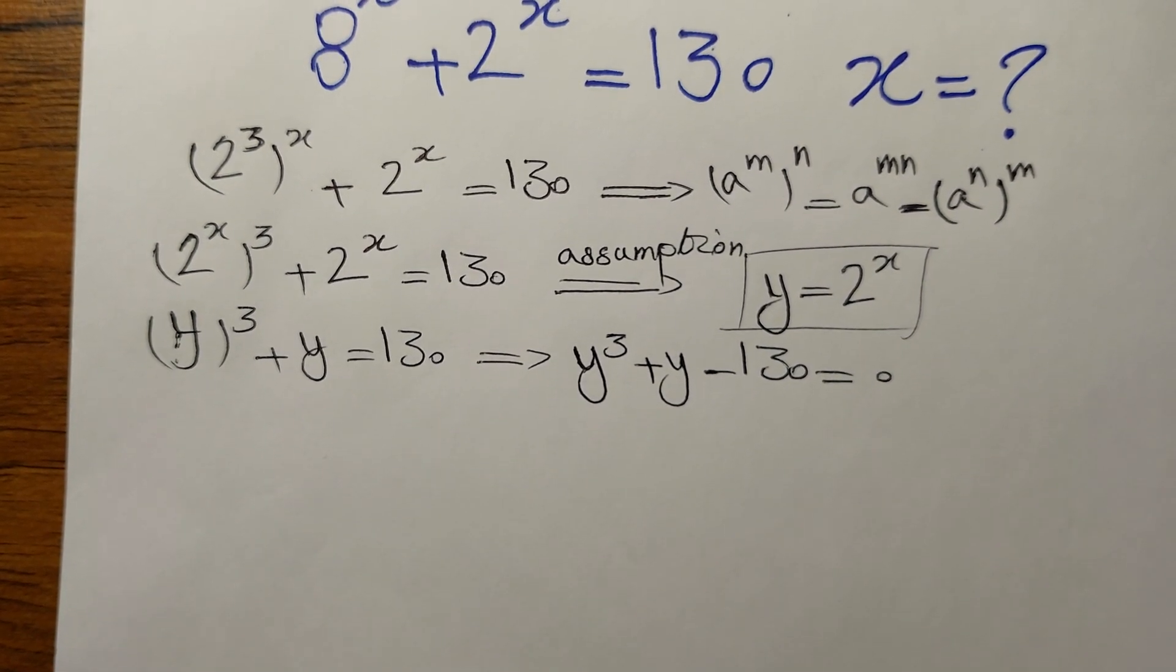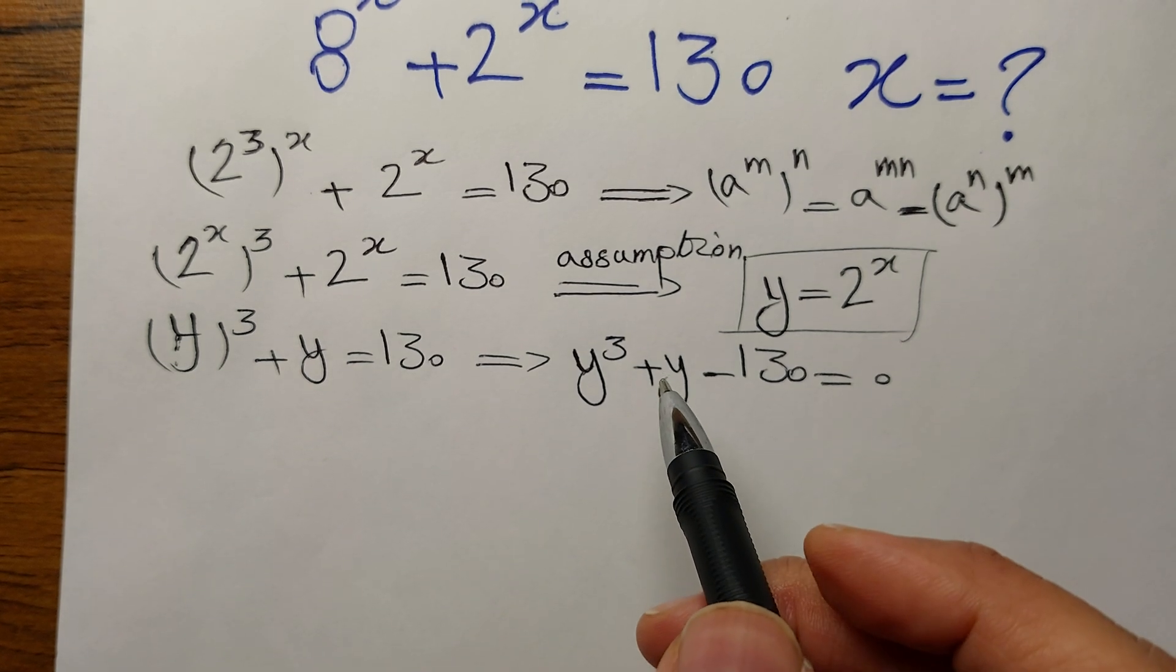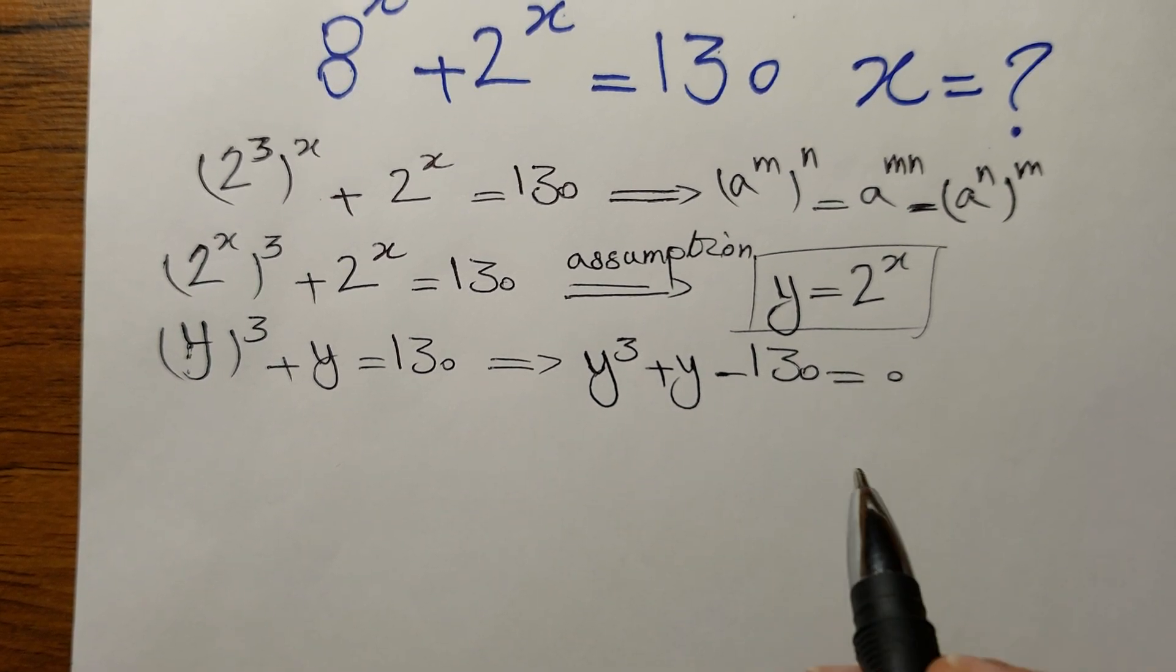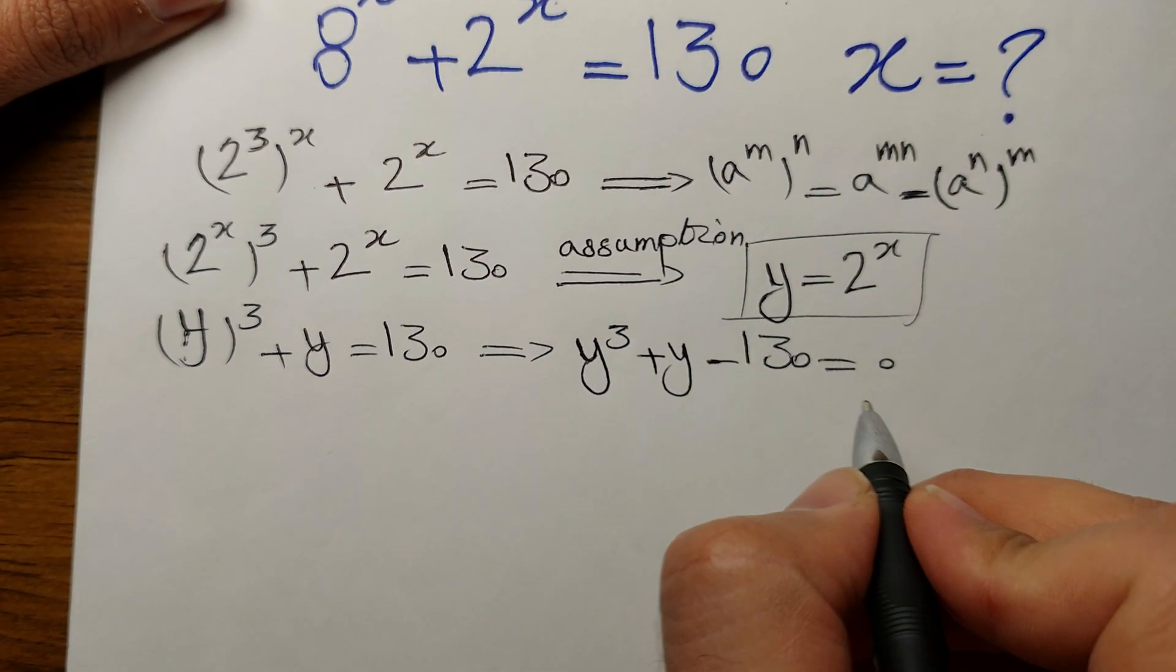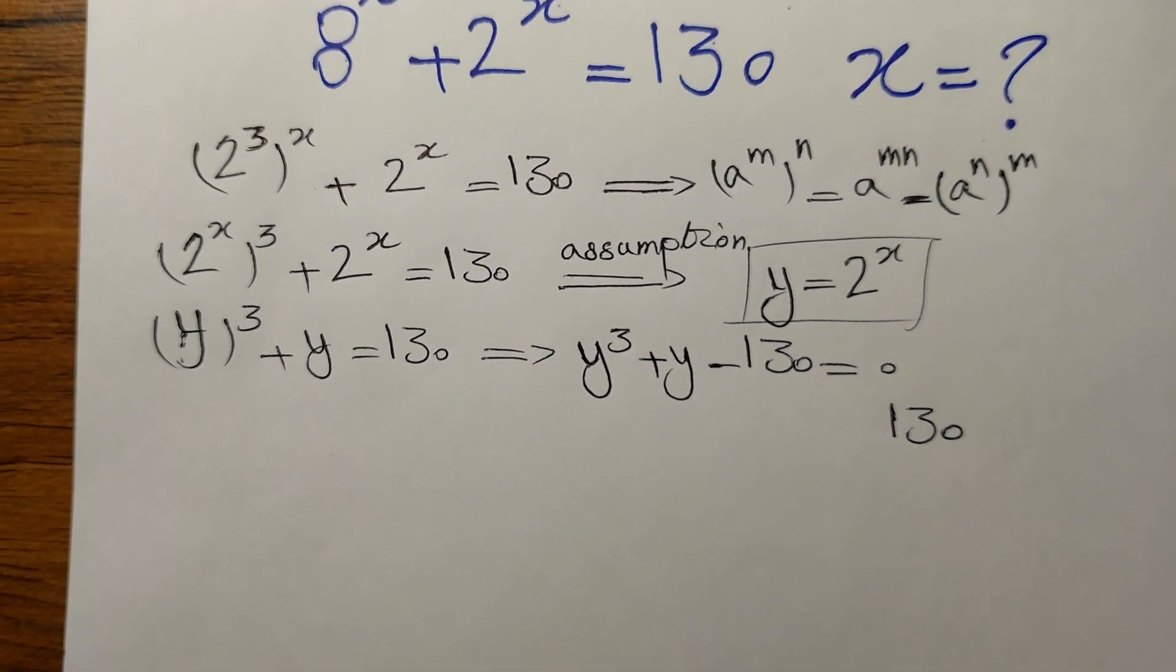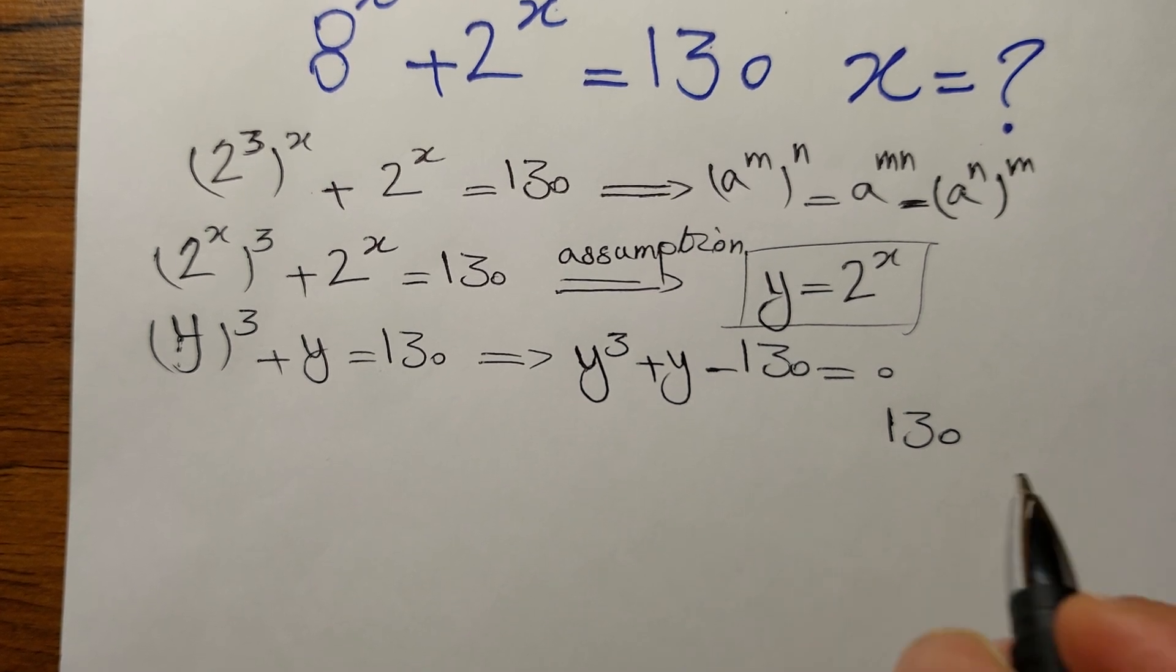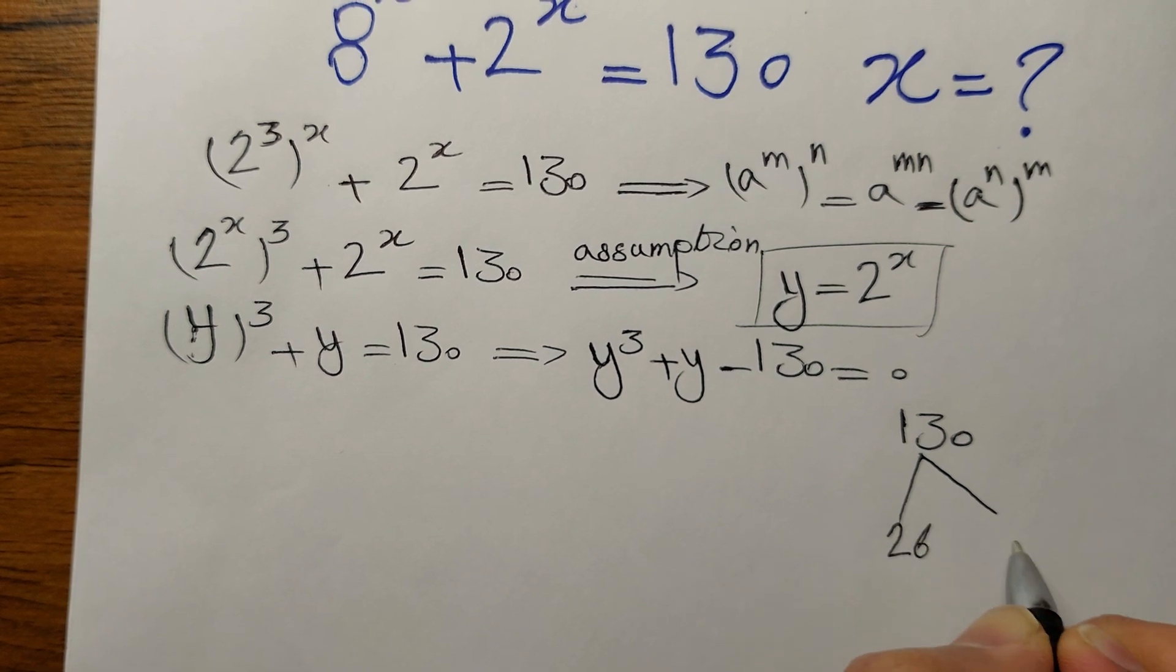So now what? This is a third degree equation. We need to use a trick to make it easier for us. Remember, factorization and identities are your best friends in this type of exponential equation because you need to find a way to decode, to penetrate into this whole equation. Let's take 130. It has many divisors. For this video, one of the divisors of 130 is 26 and 5. 5 times 26 is 130.